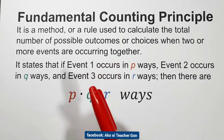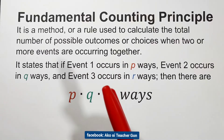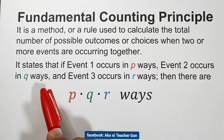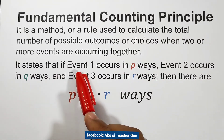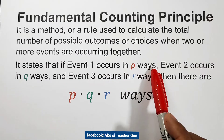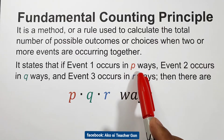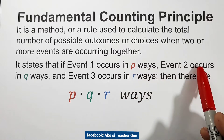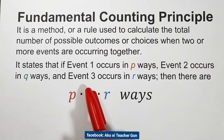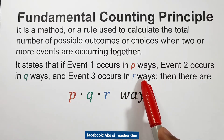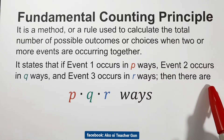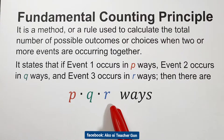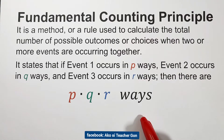So not one, but two or more events happening together. It states that if event one occurs in P ways, event two occurs in Q ways, and event three occurs in R ways, then there are P times Q times R possible ways.